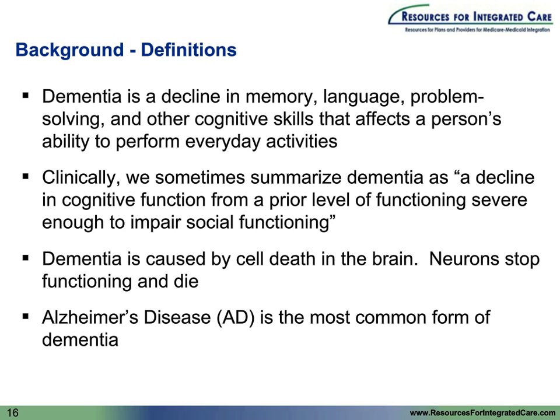Dementia is more than memory loss — we're looking for memory loss and impairment in other areas before making a diagnosis. It is a decline in cognitive function from a prior level of functioning, and it has to be severe enough to impair social functioning. If someone scores poorly on the mini mental status exam but has had lifelong cognitive impairment, that may not represent a decline. And when we talk about social functioning, it means things like paying bills and managing your home — the types of things needed to live independently. Dementia is caused by cell death in the brain, where neurons actually die, with the parts dealing with short-term memory impaired first.